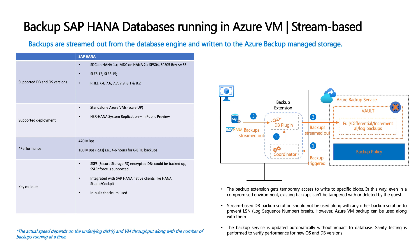We constantly certify with SUSE and RHEL versions. In terms of supported deployment models, we support standalone Azure VMs — scale up only, not scale out. HANA System Replication (HSR) is currently in public preview. In terms of performance, we support 420 Mbps transfer rates. Key callouts include support for SSFS (secure storage file system) encrypted databases and SSL. We also have a built-in mechanism to perform checksum validation, which increases the reliability of the backups.